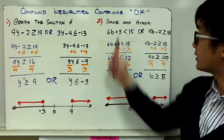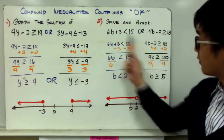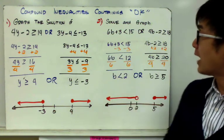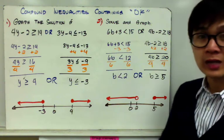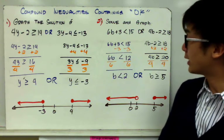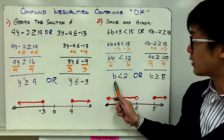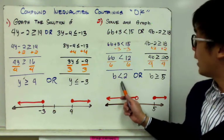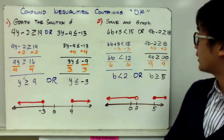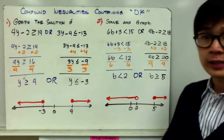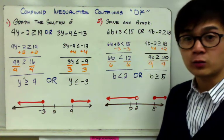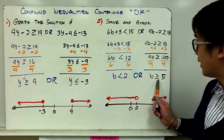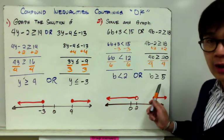For OR example 2: 6b plus 3 less than 15, or 4b minus 2 greater than or equal to 18. To solve the first set, subtract 3 on both sides then divide both sides by 6, so b is less than 2. For the other side, 4b minus 2 greater than or equal to 18: add 2 on both sides and divide both sides by 4, giving b greater than or equal to 5.